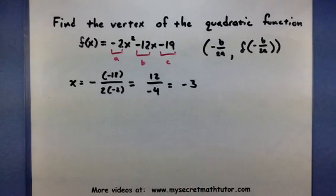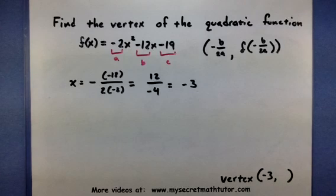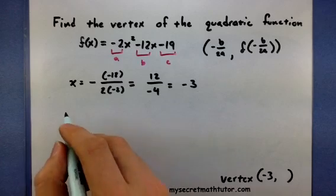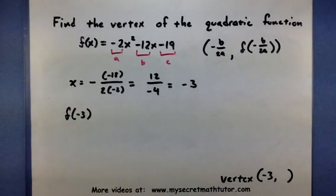Alright, so that gives me half of my vertex. Now I want to figure out what the y coordinate is. So to do that, I take my value that I found for x and I plug it into my function.